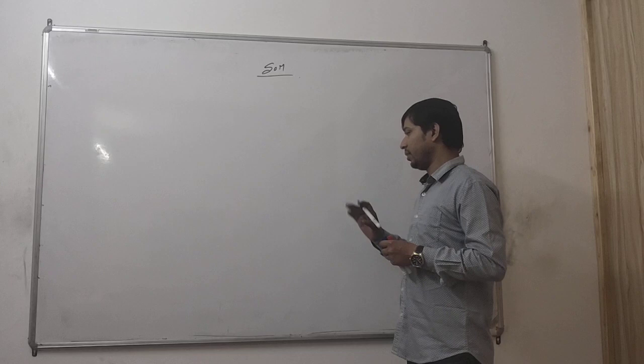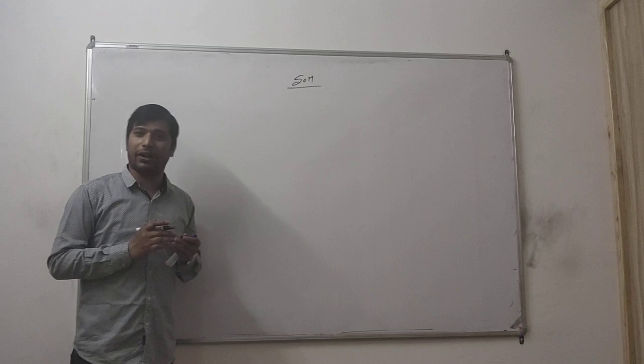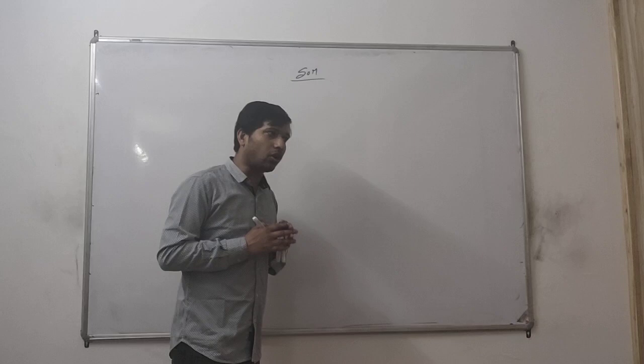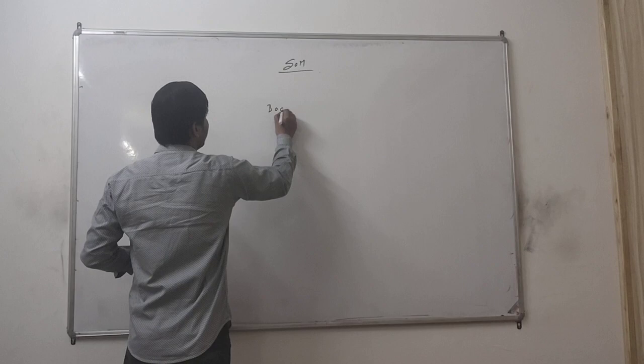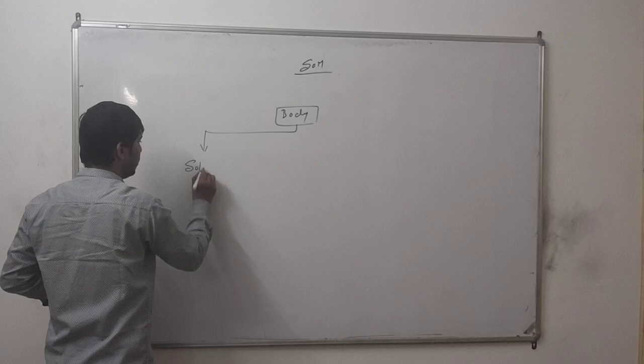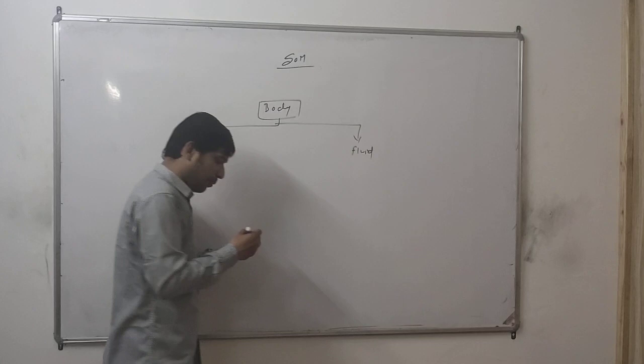In Strength of Materials, we basically study some interesting topics. First of all, we study what type of body we consider. If we talk about bodies, there are two types: solid body and fluid body. Suppose this body is the solid body.